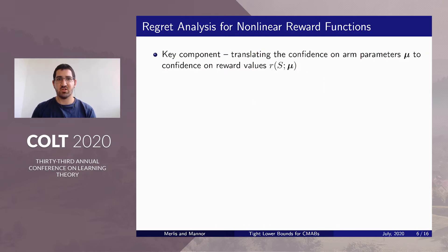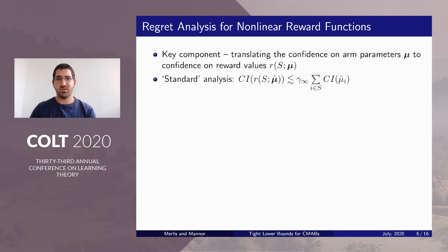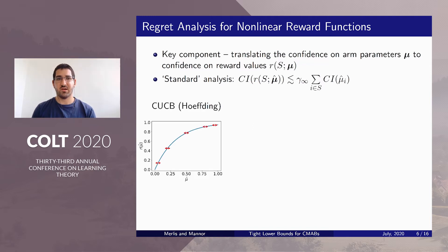Let's talk about the intuition behind the Gini-smoothness. To understand it, we need to understand a key step in any analysis for combinatorial bandits, which is translating uncertainty on arm parameters due to feedback on specific arms into uncertainty in reward values. The standard way to do so is using the global Lipschitz constant. Hoeffding-based confidence intervals have the same width across the parameter space, and if we translate them into reward uncertainty using the global Lipschitz constant, we get relatively wide intervals.